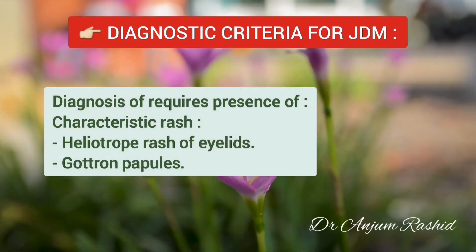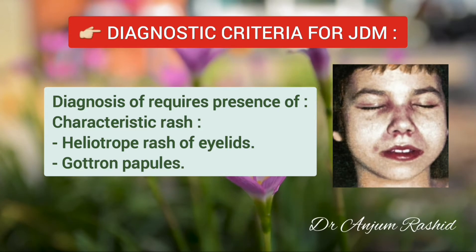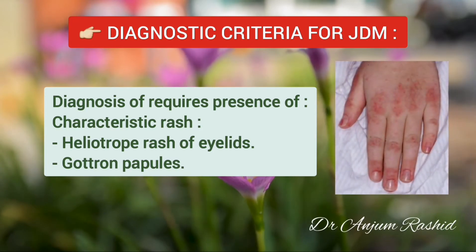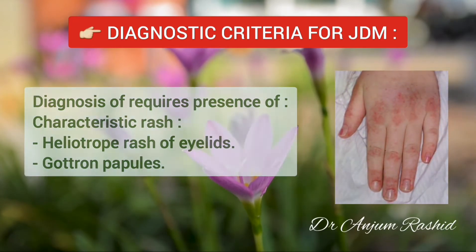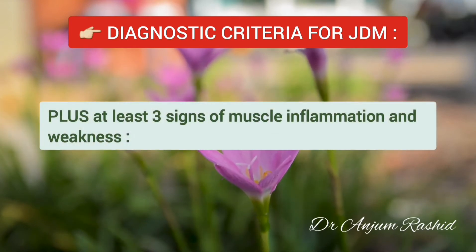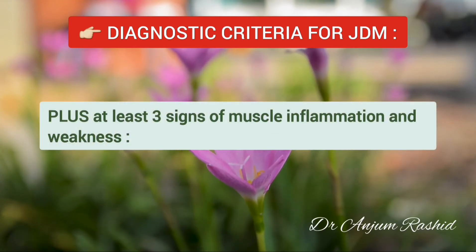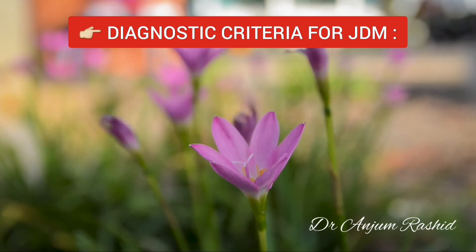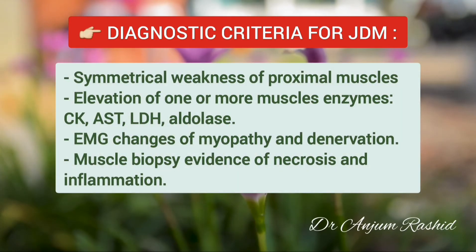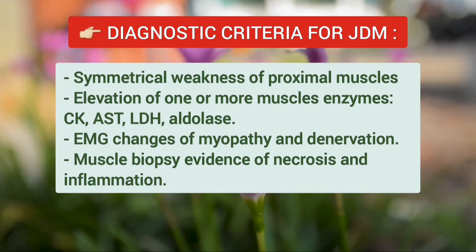The diagnostic criteria for JDM require the presence of a characteristic rash — that is, heliotrope rash of the eyelids and Gottron papules — plus at least three signs of muscle inflammation and weakness. These include symmetrical weakness of proximal muscles, elevation of one or more muscle enzymes (creatine kinase, aspartate transaminase, lactate dehydrogenase, and aldolase), electromyographic changes of myopathy and denervation, and muscle biopsy evidence of necrosis and inflammation.